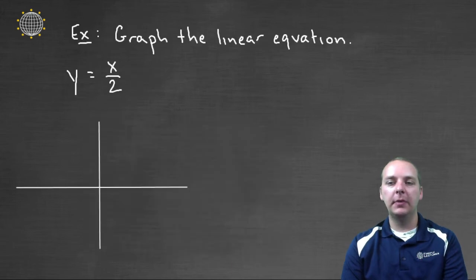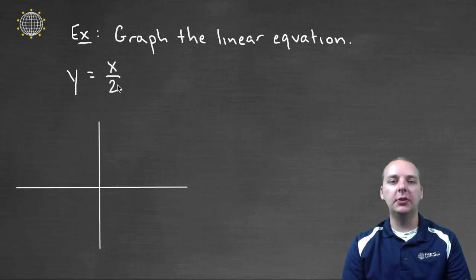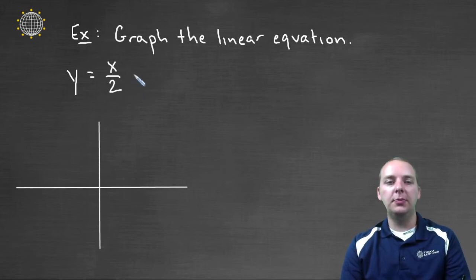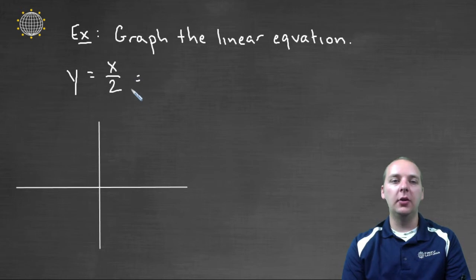Alright, last one. This one's kind of a strange one, just because it looks a little different. We have y equals x over two. Now, a couple things. One, I don't clearly see an m, and second of all, I don't see a b-value at all. Well, really, there is one there, but we just might have to write it in a particular way. This x, if you have a term in the numerator, you can pull that off the numerator, and we could write this as one-half x.